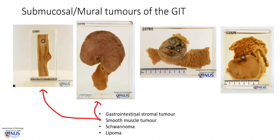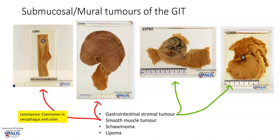On the left, we actually have two examples of leiomyomas. These tend to be more common in the esophagus and the colon. And on the right, these two are gastrointestinal stromal tumours, which are more common in the stomach and in the small intestine.